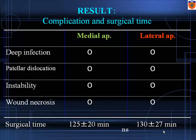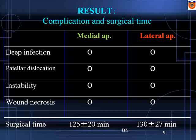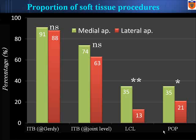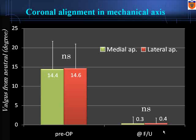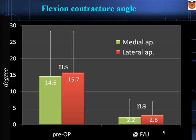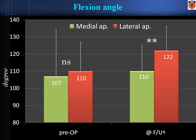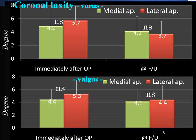Results: no serious complications in either group. No difference in surgical time between two groups. Regarding percentage of soft tissue release — green bars indicate medial approach and lateral approach — there was no difference between two approaches in frequency of ITB release and cutting. However, less frequent release of LCL and popliteal tendon was seen in the lateral approach. Mechanical axis: no differences between two groups at postop and follow-up. Flexion contracture angle: no difference between groups. Flexion angle: no difference at postop, but better flexion angle in the lateral approach at follow-up. Varus/valgus laxity: no difference between two groups immediately after surgery or at follow-up.